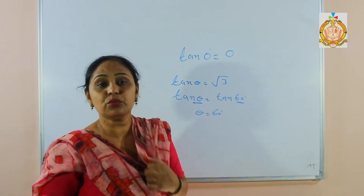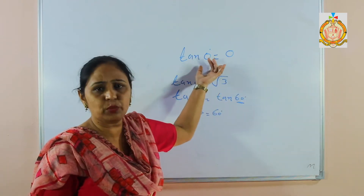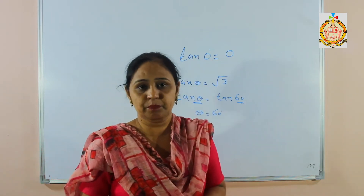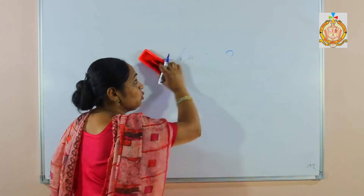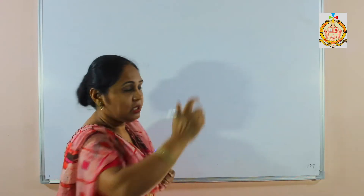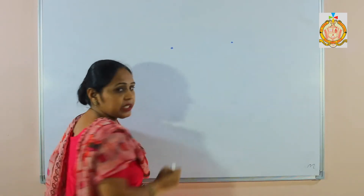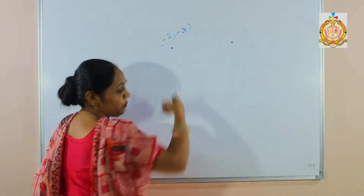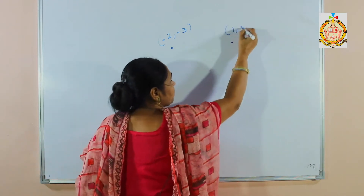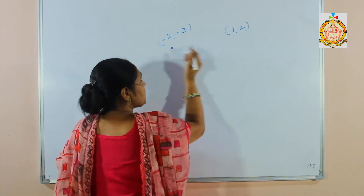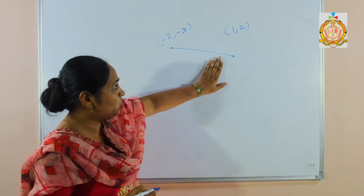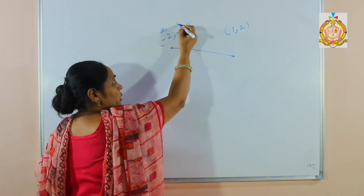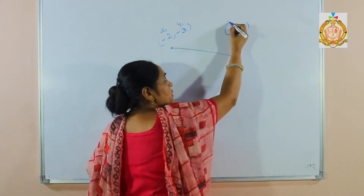Now I have to find the slope when two points are given instead of an angle. Suppose the first point is (−2, −3) and the second point is (1, 2). This becomes a line. The formula for slope when two points are given is: slope m equals y2 minus y1 upon x2 minus x1. So x1, y1 come from the first point and x2, y2 from the second point.